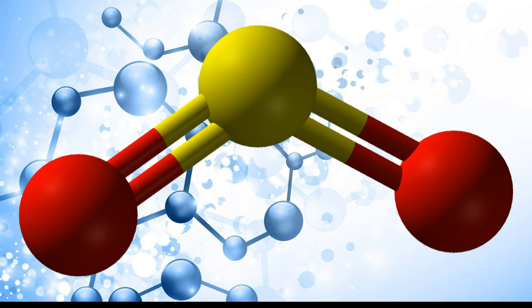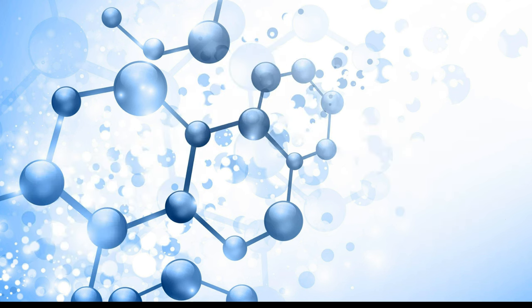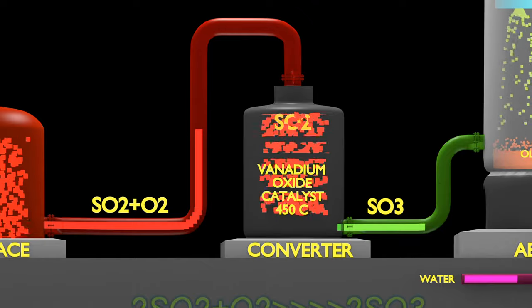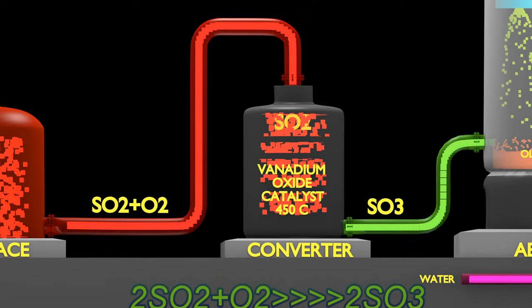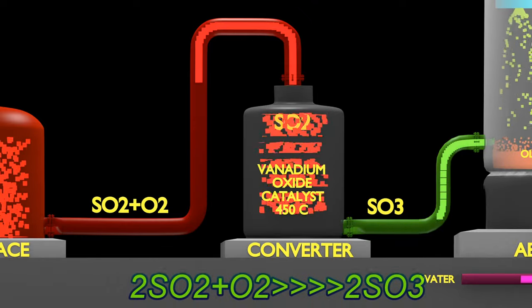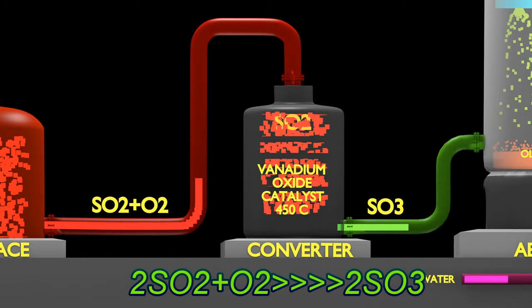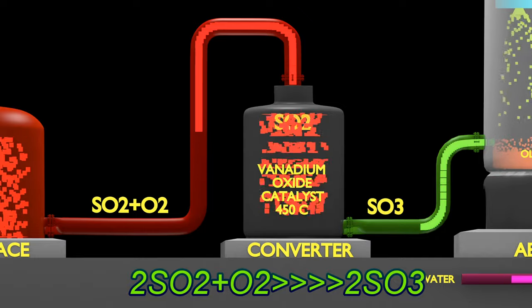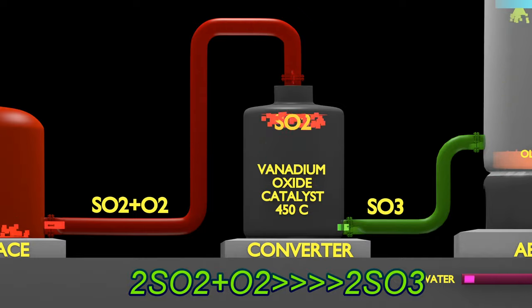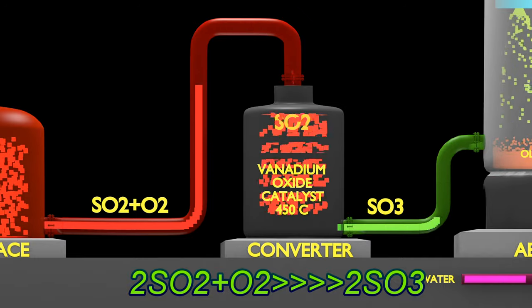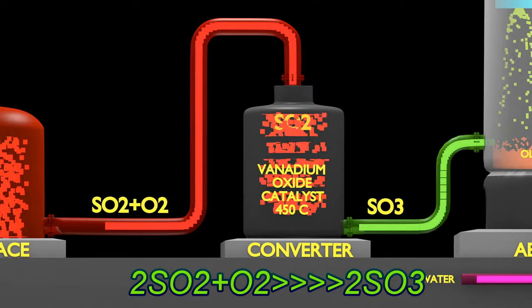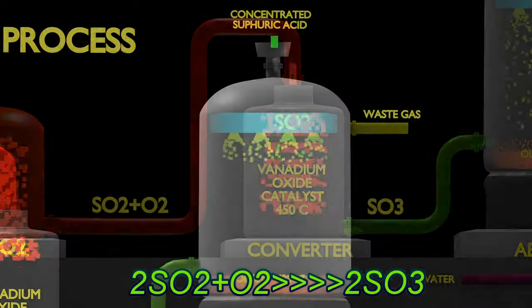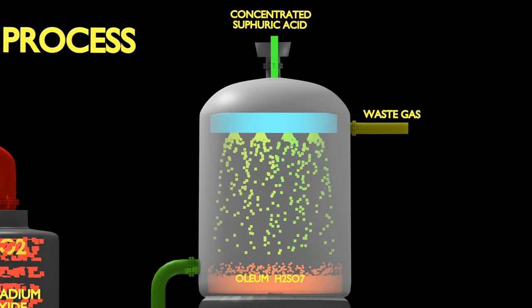Converting the sulfur dioxide into sulfur trioxide is the next step. Sulfur dioxide is heated with oxygen to 400 to 450 degrees Celsius in the presence of a catalyst. This is a reversible reaction and the formation of sulfur trioxide takes place in an exothermic process.